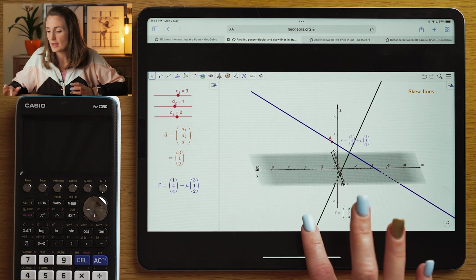Skew lines are two lines in three dimensional space that are not parallel but do not intersect. So let's visualize that.